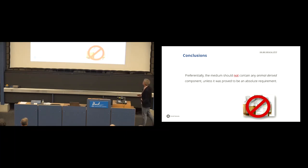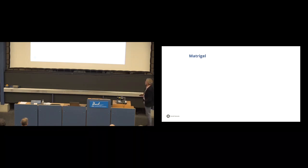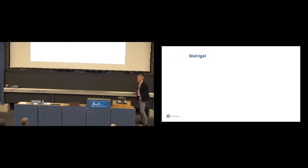So, conclusions, preferentially, the medium should not contain any animal-derived component unless it was proved to be an absolute requirement. And that brings us also to another very popular supplement, a medium in which we grow, for instance, organoids, and that's Matrigel.